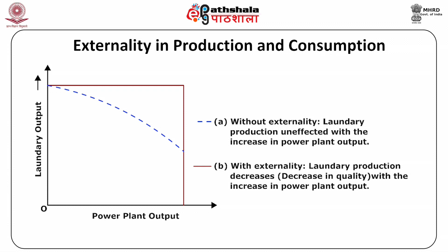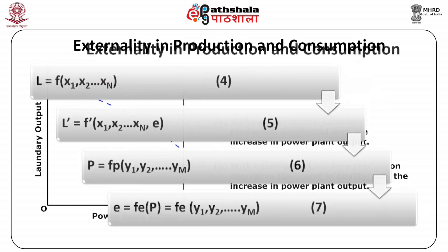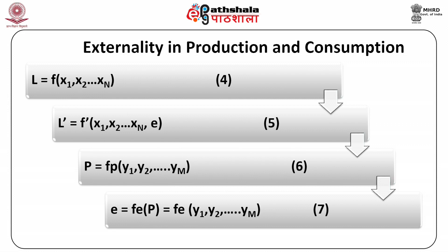We shall now discuss externalities in production and consumption. There are many examples of negative externalities around us. Noise from a dance club may force a nearby recording studio to incur extra costs for soundproofing. As shown in the figure, dust particles generated by a coal power plant affect the quality of linen being washed by a nearby laundry. The higher the production by the power plant, the higher the generation of dust particles. The production function of the laundry is: L = F(X₁, X₂, ..., Xₙ) — equation 4.